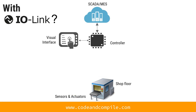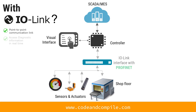Now let's see how IO-Link can resolve this problem. In this situation the sensors and actuators are linked via Profinet to the controller. You have the three main features we already discussed: point-to-point communication, access to diagnostic information, and transfer of parameters via Profinet while sensors and actuators are operational.